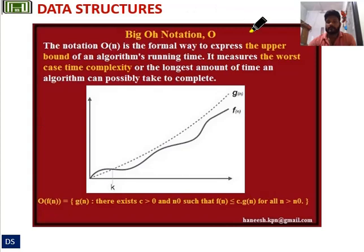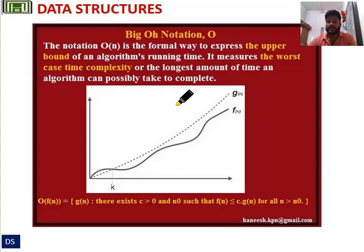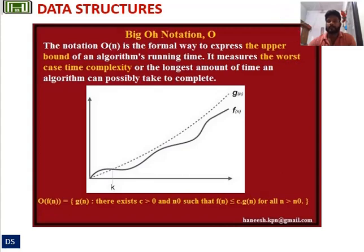Moving to Big O notation. The notation O(n) is the formal way to express the upper bound of an algorithm's running time. It measures the worst case time complexity, or the longest amount of time an algorithm can possibly take to complete.